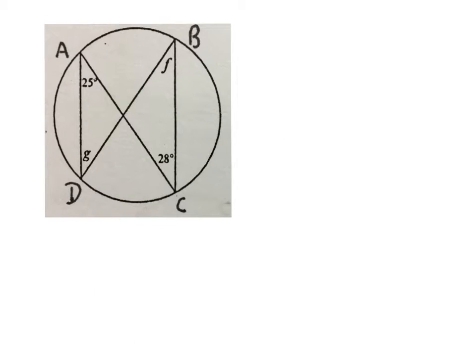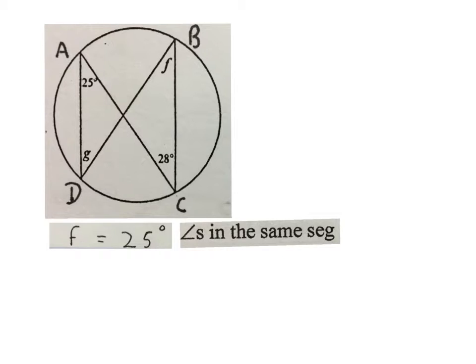In this question they gave us a circle with A, B, C and D on the circumference. They told me that's 25 degrees, that's F, that's 28 degrees and that's G. We have to find the size of small F and small G. The first answer is F equals to 25 degrees, angles in the same segment. So this angle is equal to that angle.